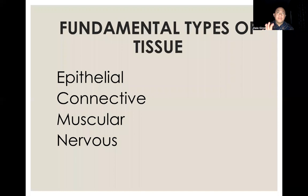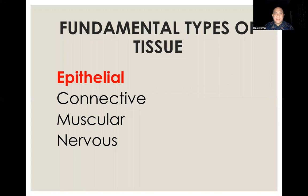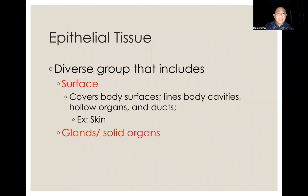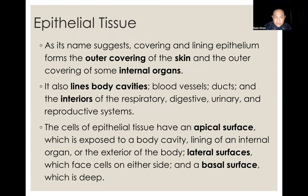When we say epithelial tissue, there are four fundamental types of tissue overall: epithelial, connective, muscular, and nervous tissue. Epithelial tissue is actually a diverse group that includes the surface and the glands. When we are talking about surface, we are talking about epithelium or epithelial tissue. When we are talking about glandular or solid organs, we are also talking about epithelial tissue as well.